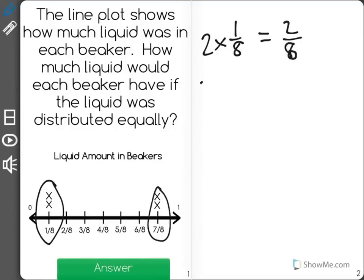And two beakers had 7 eighths, which would be 14 eighths. Now when we add those together, we see that there were 16 eighths of a cup.